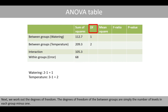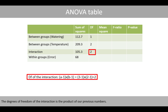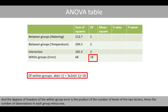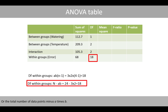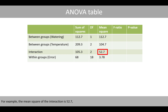Next, we work out the degrees of freedom. The degrees of freedom for the between-groups terms are simply the number of levels in each group minus one. For example, since the factor of watering has two levels, the corresponding degrees of freedom is two minus one. The degrees of freedom of the interaction is the product of our previous numbers. And the degrees of freedom of the within-group error is the product of the number of levels of the two factors times the number of observations in each group minus one, or the total number of data points minus A times B. We then calculate the mean squares, which is simply the sum of squares divided by the corresponding degrees of freedom. For example, the mean square of the interaction is 52.7.